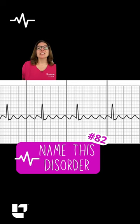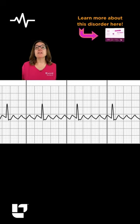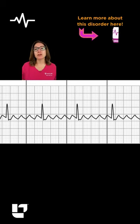This disorder is a dysrhythmia that causes the atria to beat very rapidly, between 250 and 400 beats per minute.